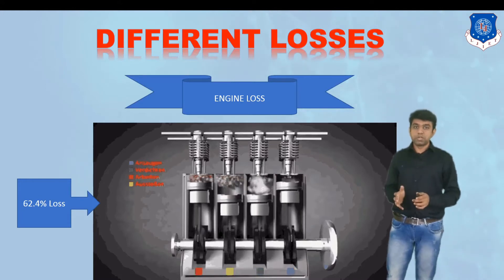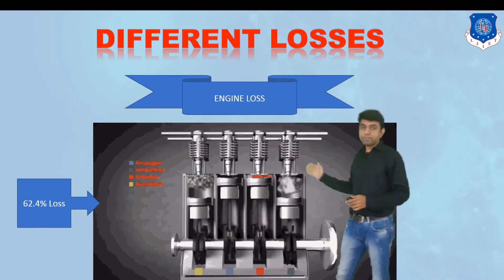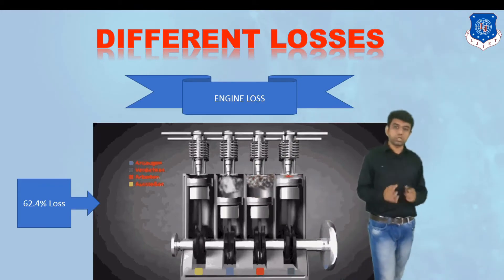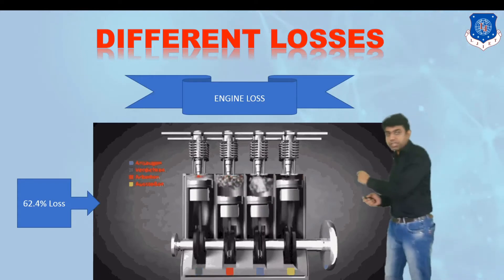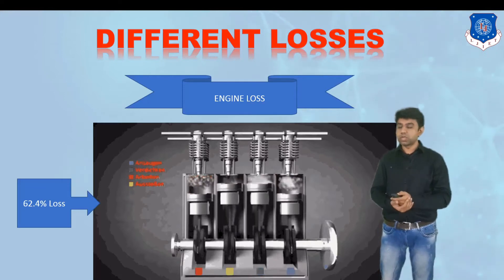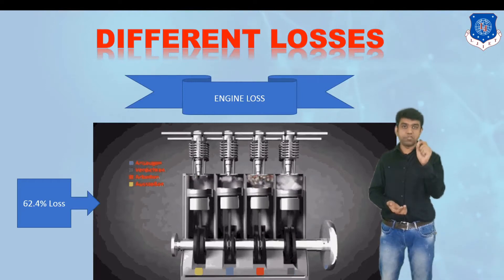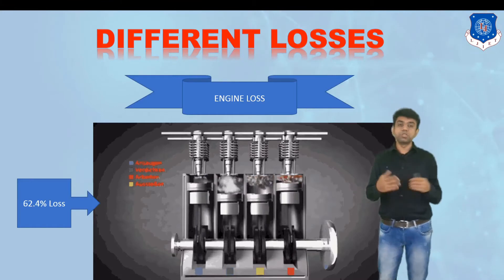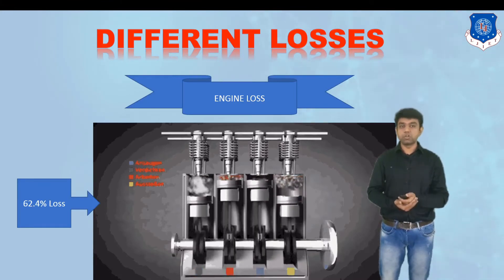The first energy-losing component is the engine itself. From 100% of the fuel, 62.4% of energy is lost at the engine just to convert fuel energy into indicated power. If we can reduce even a fraction of that 62.4% loss, it can have a huge effect on the final energy consumption and average mileage of the vehicle.